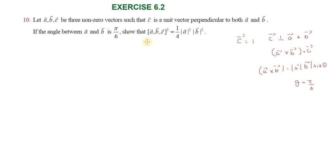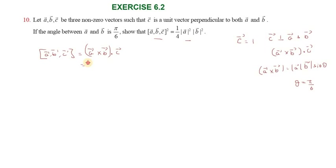So, we will have to prove this. First, A, B, C are non-zero vectors. We write the scalar triple product: A vector, B vector, C vector equals A vector cross B vector dot C vector.